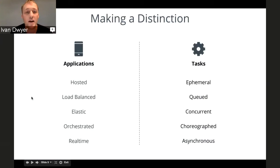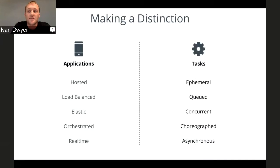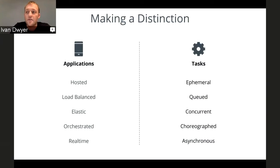Before I get into the actual pattern, I want to make a distinction between applications and tasks — so we really understand why there's a need for a different type of platform environment for this type of work. On the application side, they're hosted and have to be highly available. Traffic is distributed by load balancers and capacity is adjusted by adding and moving instances — the elastic promise of the cloud. On the other hand, tasks only really need the runtime available for the duration of the process itself. Their traffic is handled by queuing up jobs, and scaling is done by adding more concurrent processes within the same resources instead of scaling instances up and down.